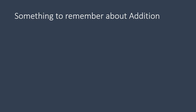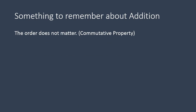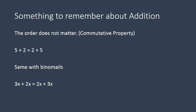One more thing to remember about addition is that the order does not matter. That's called the commutative property — it means you can move things around. So 5 plus 2 is the same thing as 2 plus 5. And the reason why this is important is that with binomials or polynomials of any kind, you can move things around. 3x plus 2x is the same as 2x plus 3x.